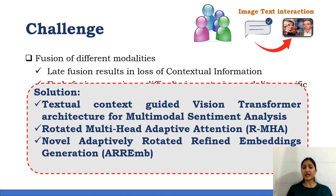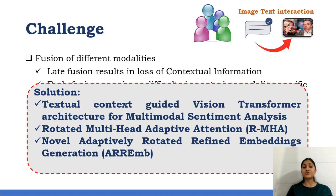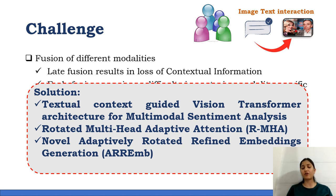Looking at these challenges, we came up with the solution: a Textual Context Guided Vision Transformer architecture for multi-modal sentiment analysis, where the Rotated Multi-Head Adaptive Attention allows the text information to guide the visual details learned by the transformer architecture. This approach allows learning of text-aligned visual features, resulting in correct sentiment prediction rather than biased prediction toward any specific modality. This has been made possible by defining discriminative text representations as novel adaptively rotated refined embeddings that carry forward the contextual details of the text for sentiment prediction in the transformer attention block.